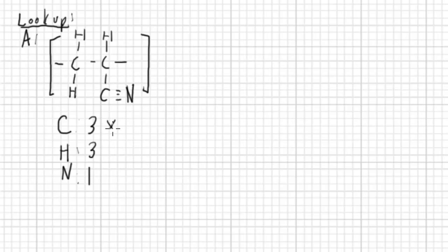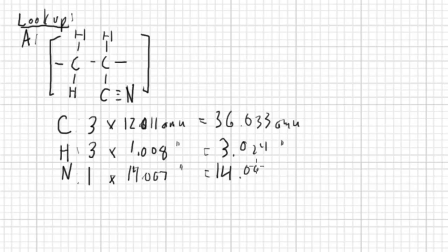We're going to multiply by its mass, 12.011 AMU, that's 36.033 AMU. Hydrogen is 1.008 AMU, 3.024, and then the nitrogen is 14.007 AMU. There's only one of them, so 14.007.